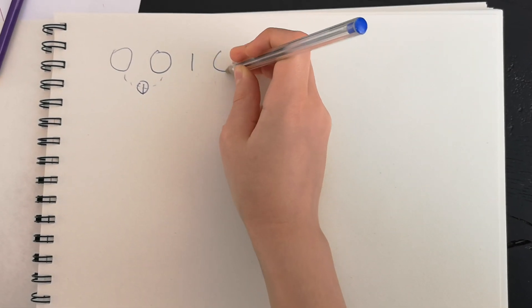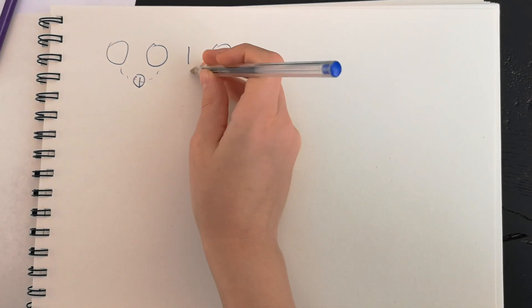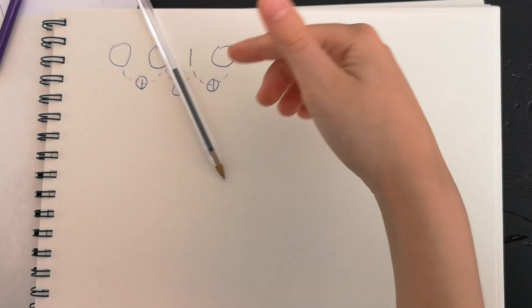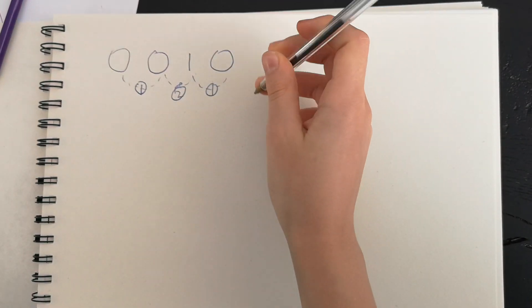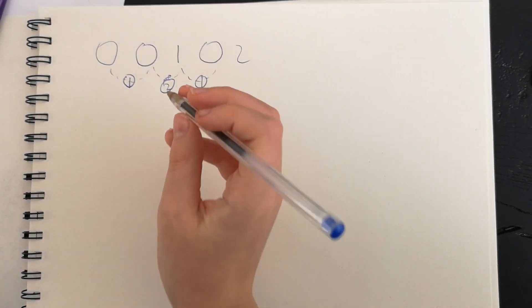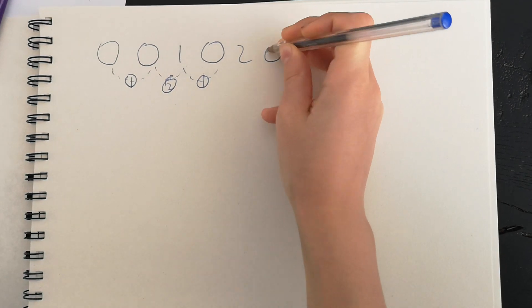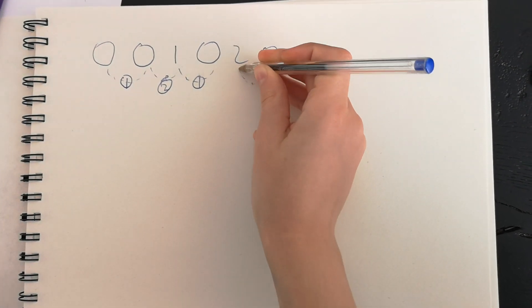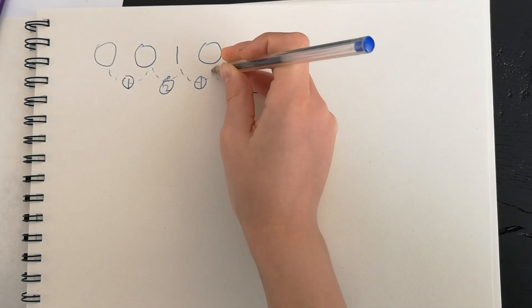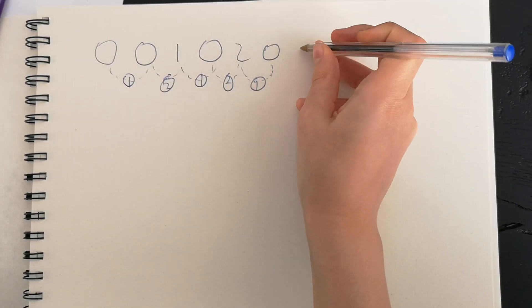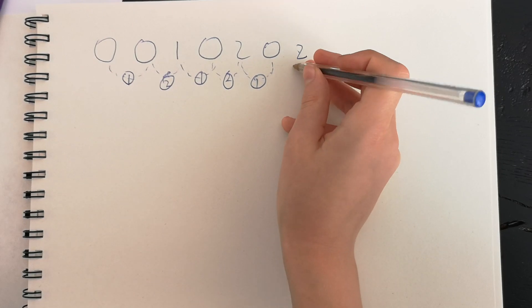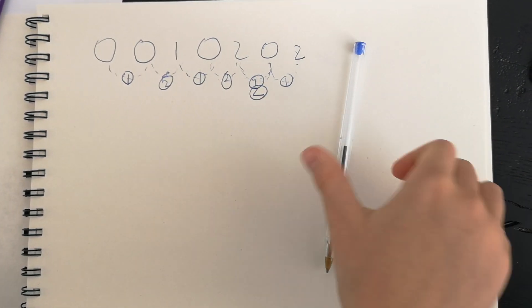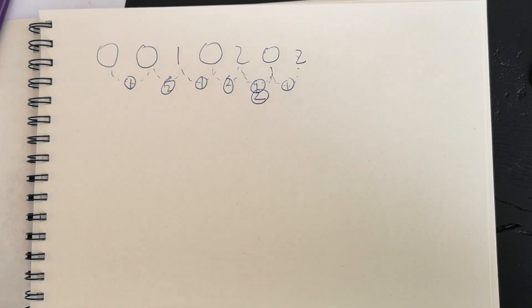Have we seen a one before? No, we haven't seen a one before, so we put a zero. Have we seen a zero before? Yes, we've seen it two steps back, so we put a two because we've seen it two steps back. Have we seen two before? No, we put a zero. We've seen zero before — yes, we saw it two steps ago. The next term is two, and we've seen a two before — it was two steps ago — so the next term is also two.